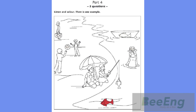Now listen to part four again. 1. Look at the fish on the boat. Can I color it? Yes. Color it green. Okay. A green fish on the boat.